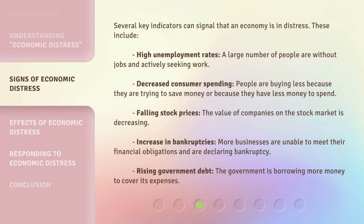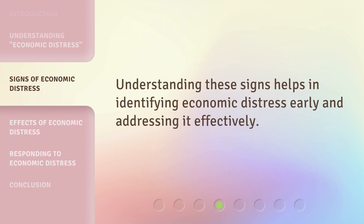Several key indicators can signal that an economy is in distress. These include high unemployment rates — a large number of people are without jobs and actively seeking work. Decreased consumer spending — people are buying less because they are trying to save money or because they have less money to spend. Falling stock prices — the value of companies on the stock market is decreasing. An increase in bankruptcies — more businesses are unable to meet their financial obligations and are declaring bankruptcy. And rising government debt — the government is borrowing more money to cover its expenses.